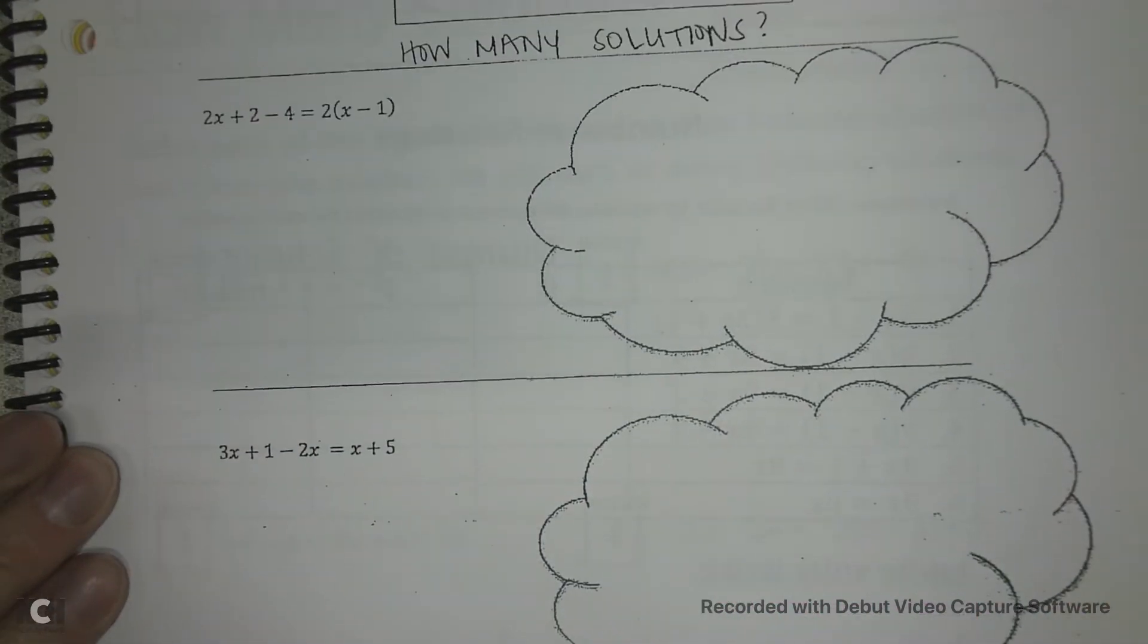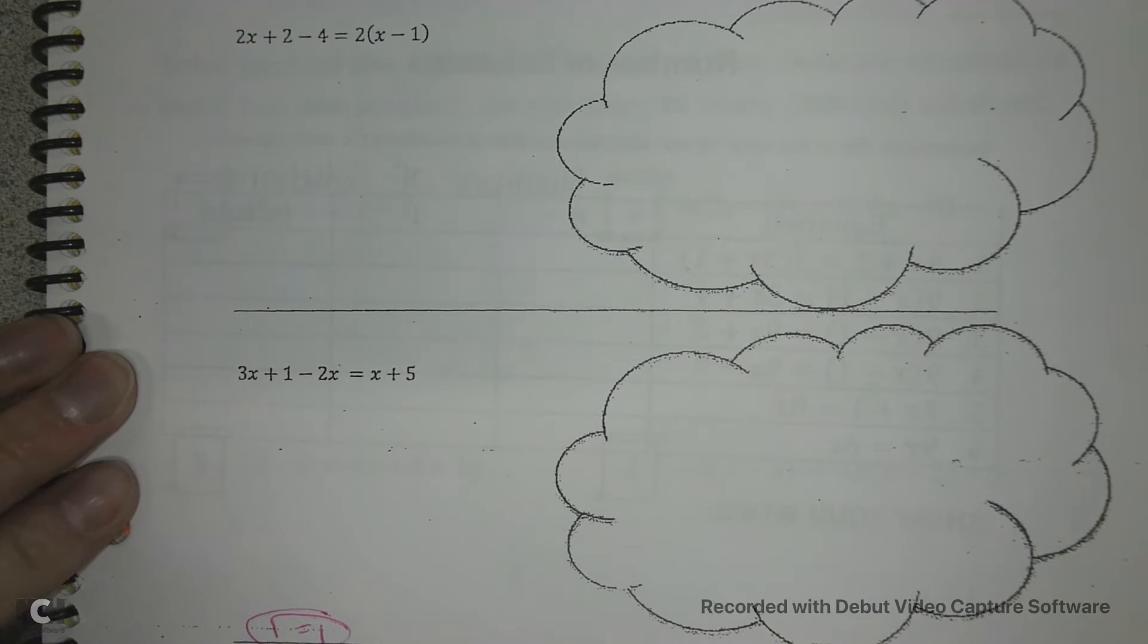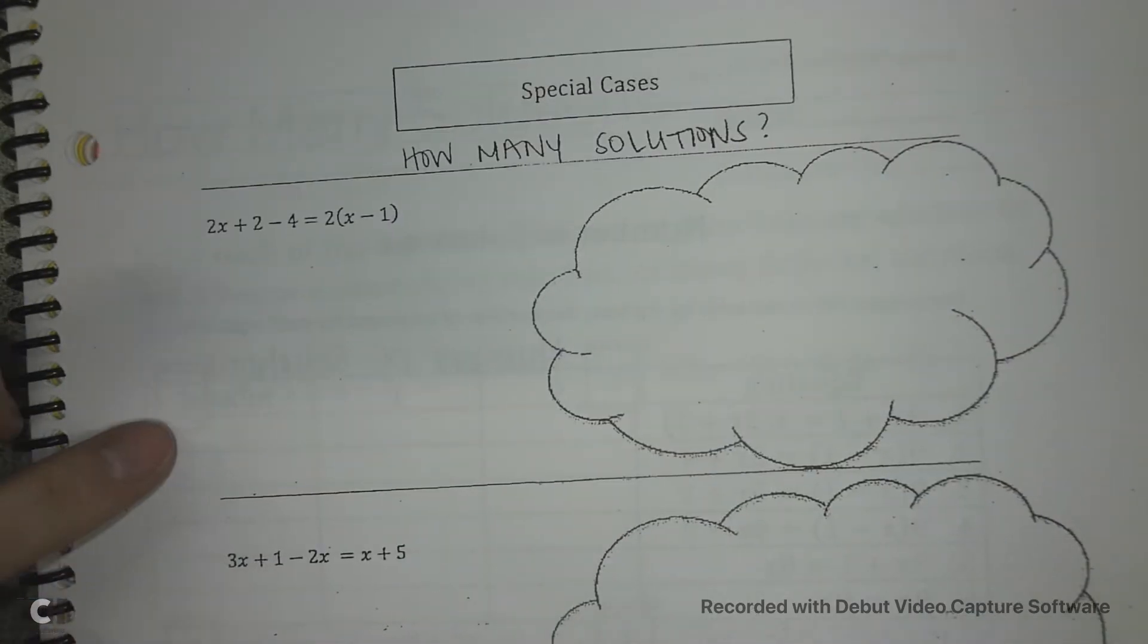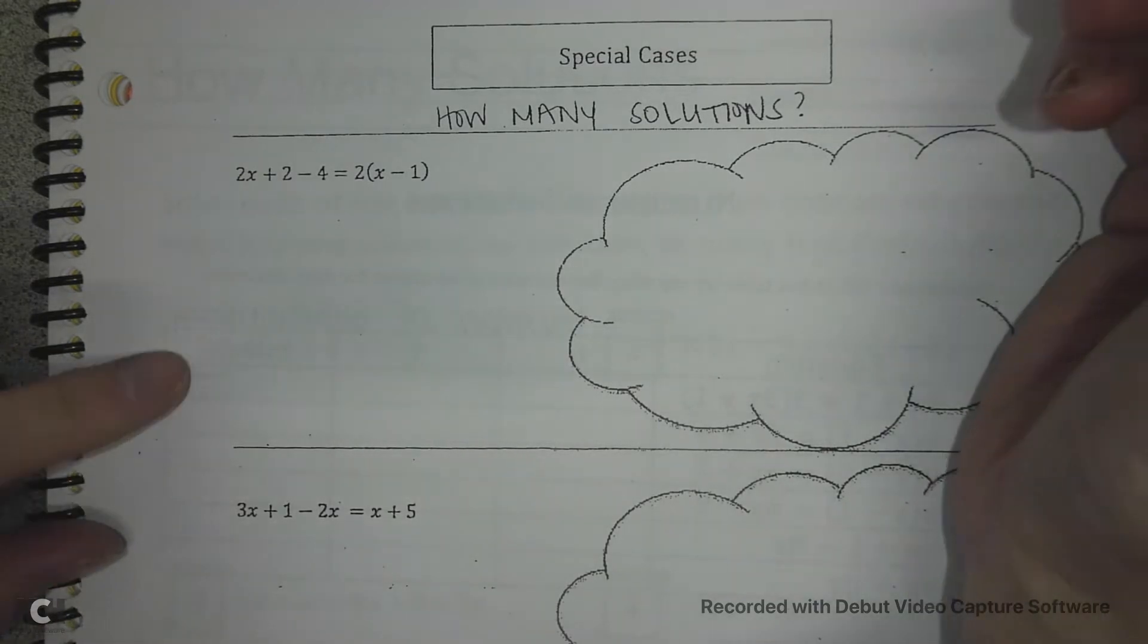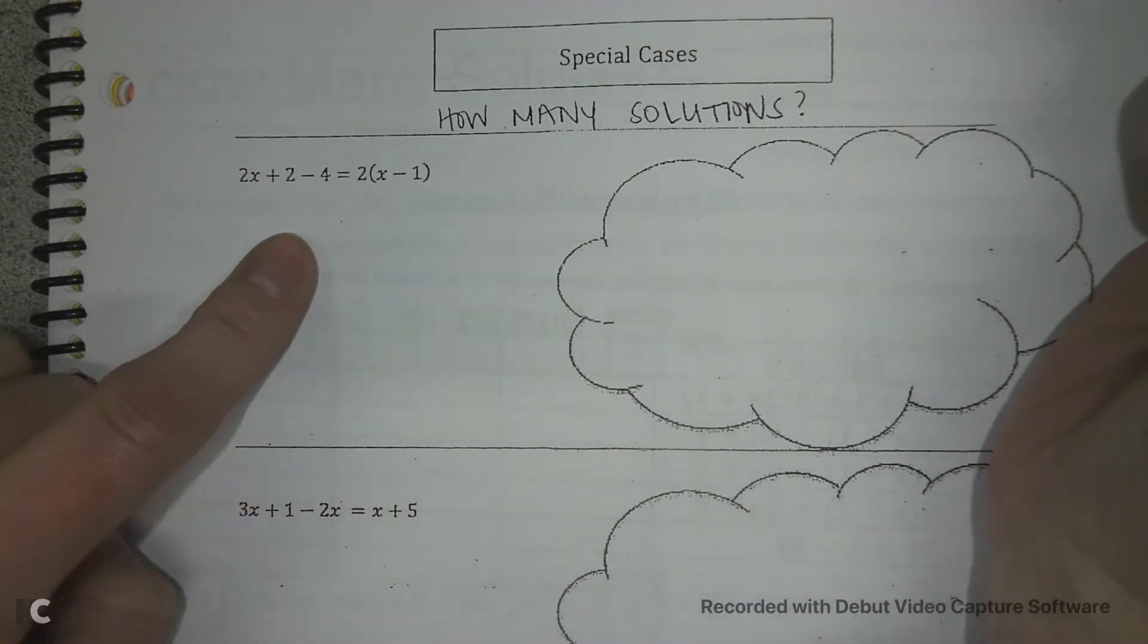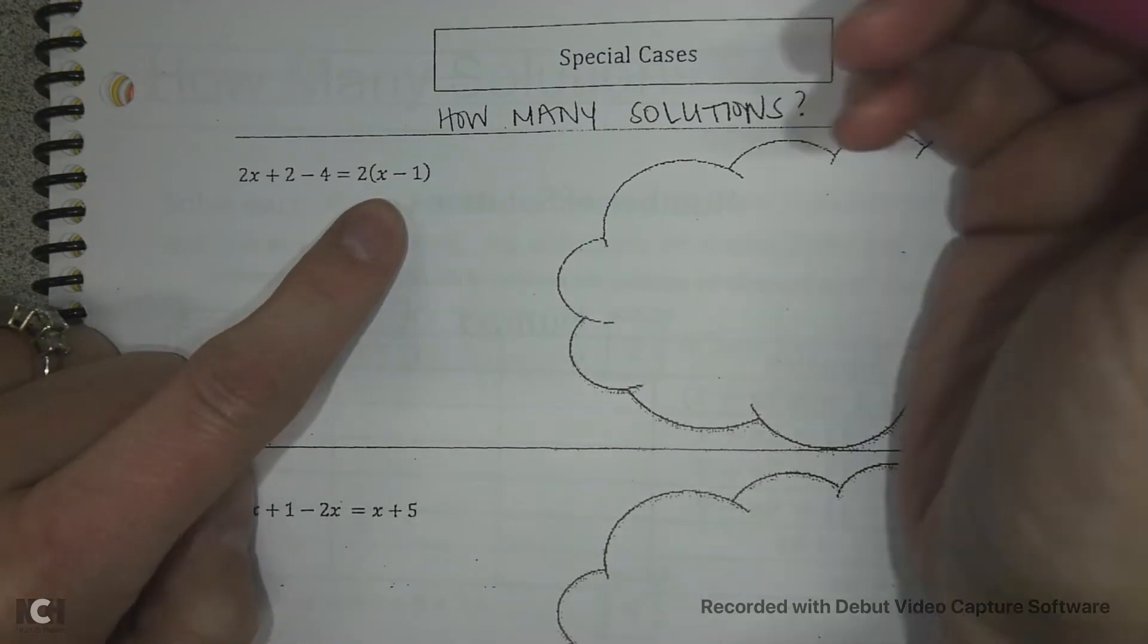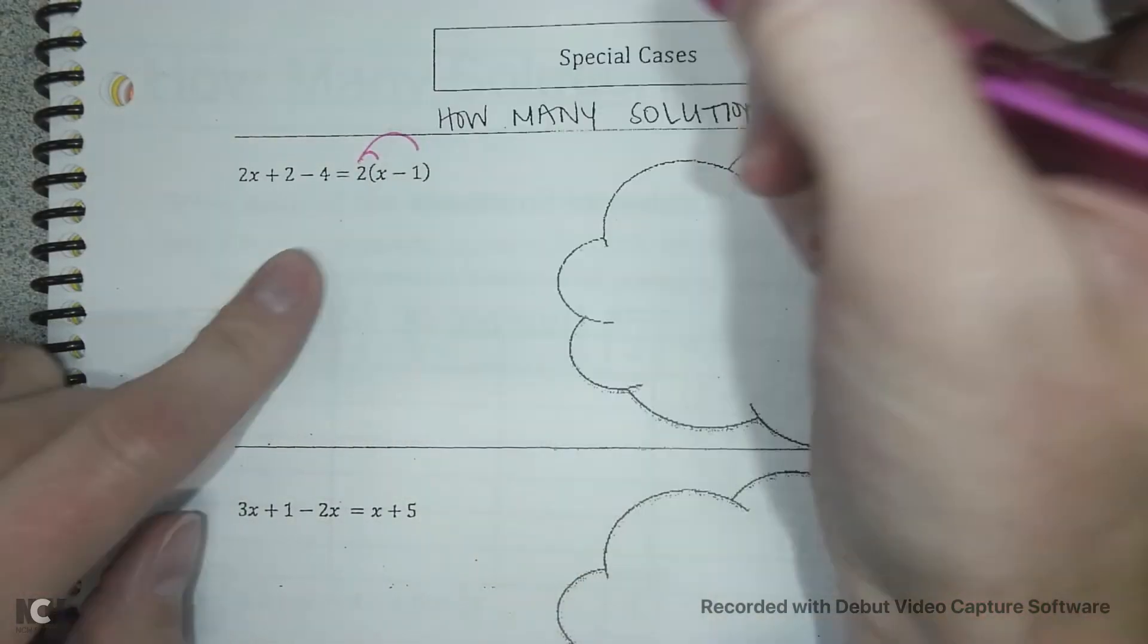Now we have these other types of solutions. We have 2 different ones. So we're going to look and solve this and then see what happens and then we're going to classify it. So we're going to give it a name. On this guy, remember our first step is we're going to distribute this 2 to the x and the 2 to the negative 1.